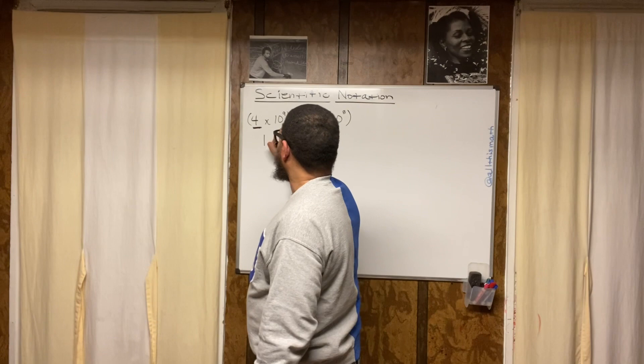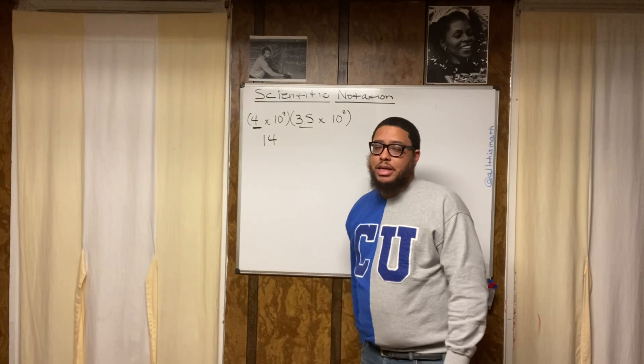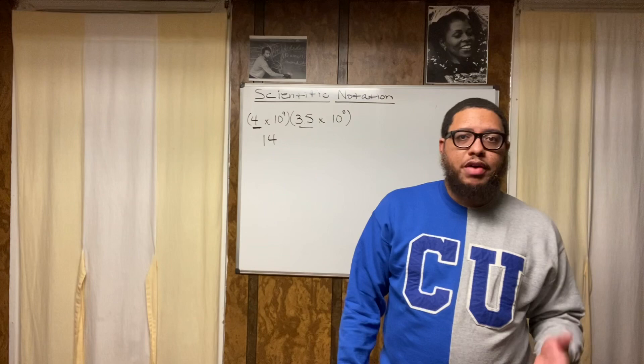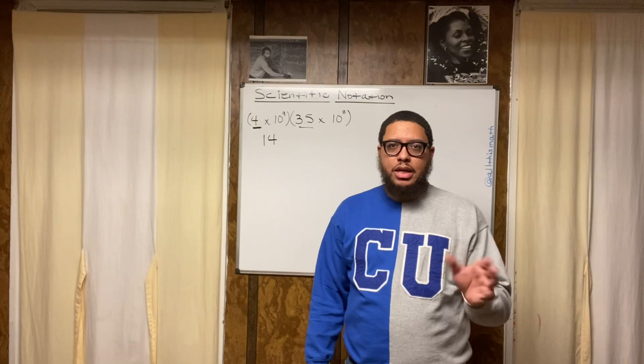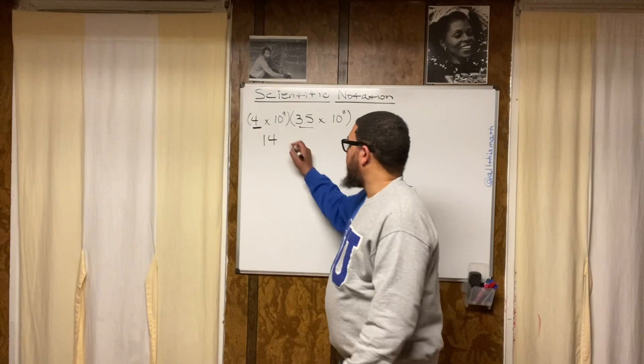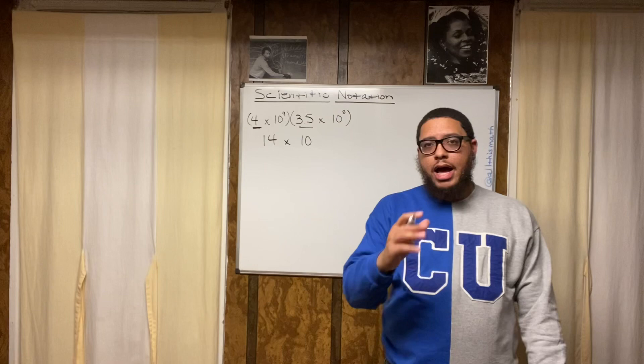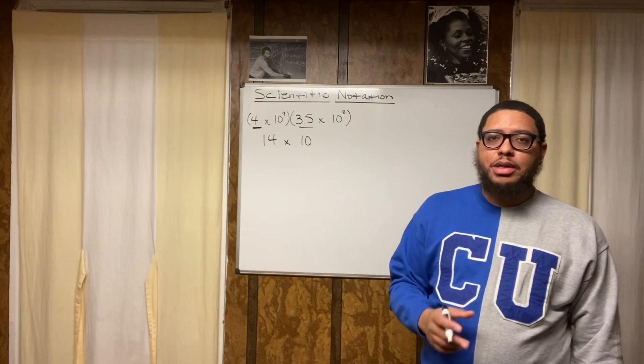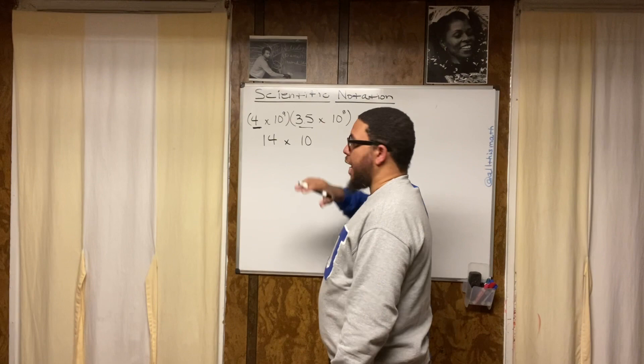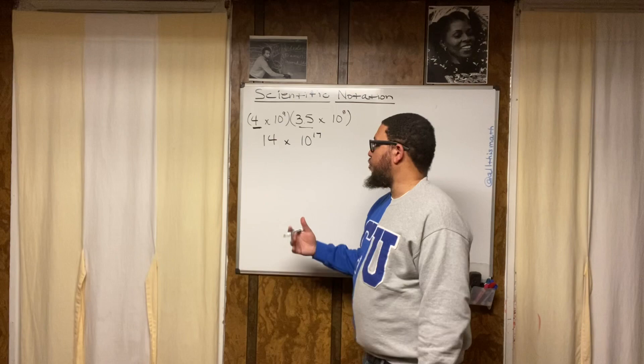So 4 times 3.5 becomes 14. Now the 10s get multiplied together — they're the same base. We use the multiplication rule of exponents: when you multiply same-base exponents, you add the exponents. Do not multiply the exponents — you add them. So 10 to the ninth times 10 to the eighth: we write the 10 one time, and do 9 plus 8, not 9 times 8. Nine plus 8 is 17, giving us 14 times 10 to the 17th power.